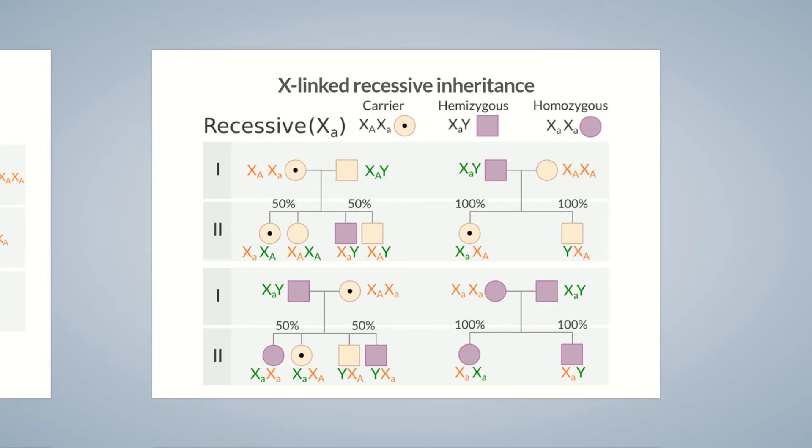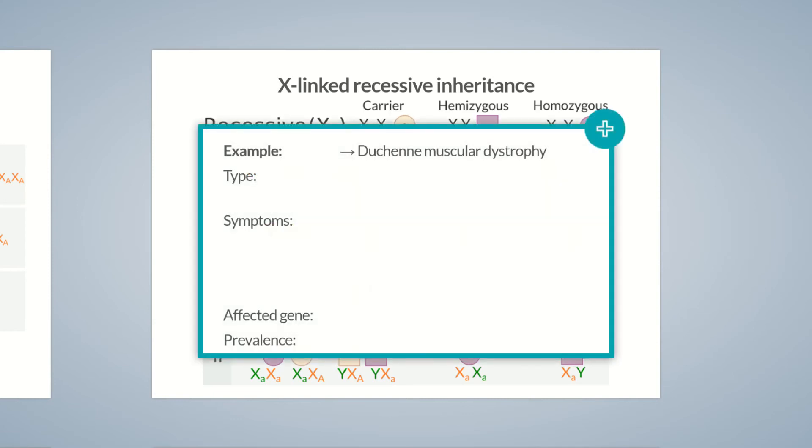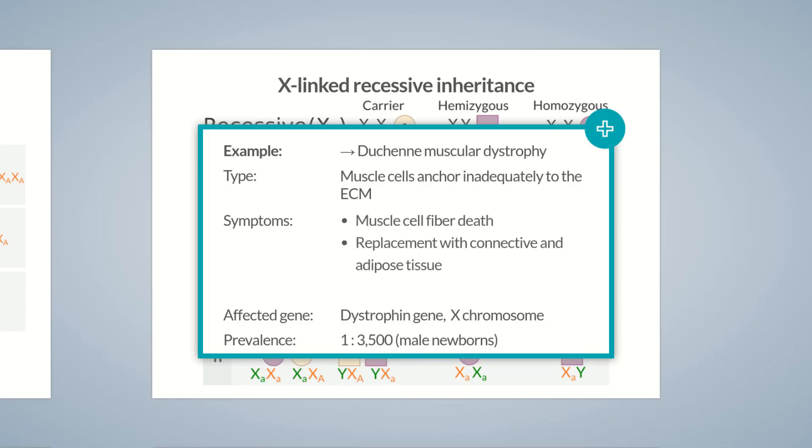X-linked recessive disorders mainly affect male individuals. One example is Duchenne muscular dystrophy, which occurs in approximately 1 in 3,500 male newborns. It's caused by a dystrophin gene defect on the X chromosome. Without functional dystrophin, muscle cells are not adequately anchored to the extracellular matrix. As a result, several clinical features start to develop in affected individuals between the ages of 3 and 5. These include muscle cell fiber death, subsequent replacement with connective and adipose tissue, and hypertrophy of remaining muscle cells.